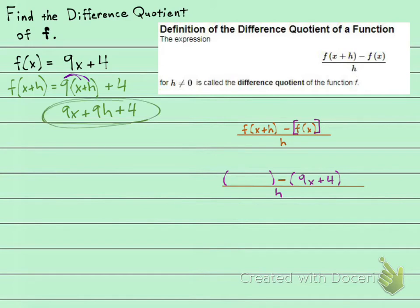Okay, now I can't simplify this any more than it is. And so this is what the f of x plus h is. It is 9x plus 9h plus 4. And that is going to go right here. So let's plug it in. 9x plus 9h plus 4.